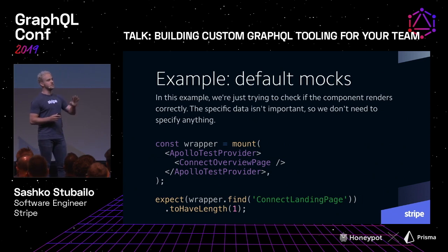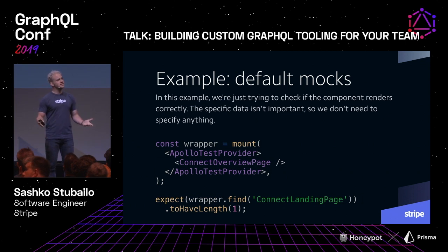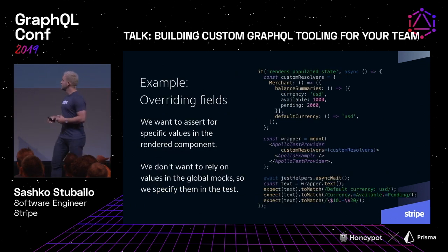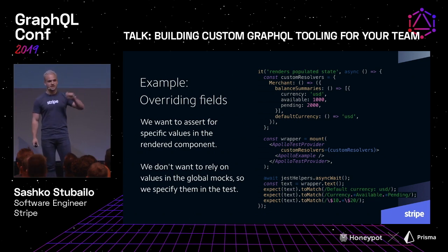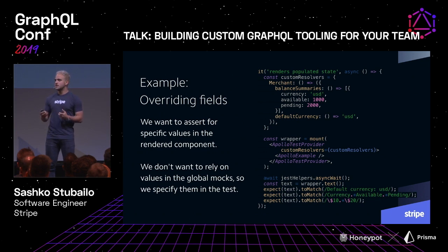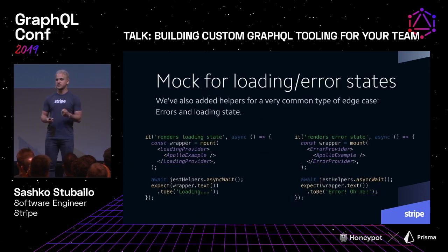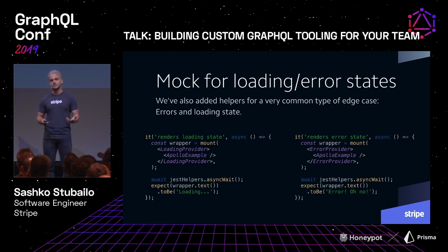When you write a GraphQL query in one of our tests or component examples, you don't have to write mocks for the whole response — only for the specific part you're trying to test. If you just want to test if your page renders, all you have to do is wrap it in our Apollo testing provider, render the component, and you're good to go. All the fake data is generated automatically. But if you want to override fields, you can override just the fields you're trying to test at the top of the test, render your component using the same test provider, and assert for those fields at the bottom. We also have special providers: a loading provider that makes all queries load forever, and an error provider that makes all queries return an error.